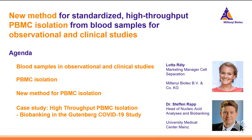We have quite a long title today: New Method for Standardized High-Throughput PBMC Isolation from Blood Samples for Observational and Clinical Studies. So let's break it down, starting from the end. First, we'll introduce and define the topic of blood samples in observational and clinical studies. Then we'll move on to PBMC isolation and introduce the new method. Then I'll hand over to Steffen, who will tell you about our case study — High-Throughput PBMC Isolation and Biobanking as part of the Gutenberg COVID-19 study, one of the largest population-based studies on the pandemic in Germany, with over 10,000 individuals in the cohort. Steffen will introduce how the study was set up and how they organized the logistics of such a large study in a short period of time.